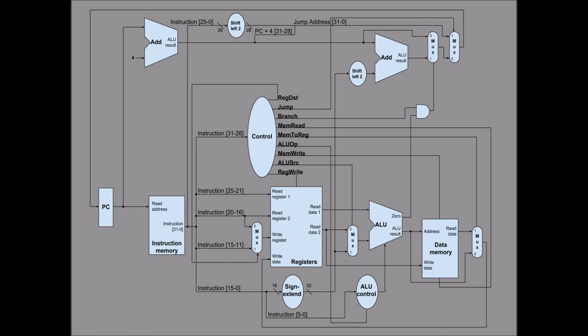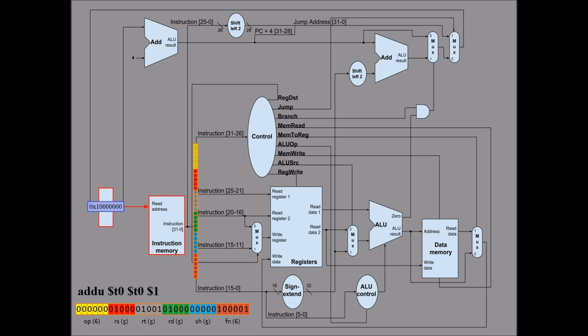The first instruction type we will examine through the datapath is the R-type. As we step through how each part of the instruction is utilized by various components, it is important to note that the hardware does not execute the instruction in the step-by-step fashion we will be examining. These steps happen concurrently, and inherent delays in the hardware ensure that data is where it needs to be when needed. For this R-type step through, we will use an add instruction. The first thing the processor must do is load the instruction from memory from the address stored in the program counter. This address is also used to calculate the address of the next instruction.